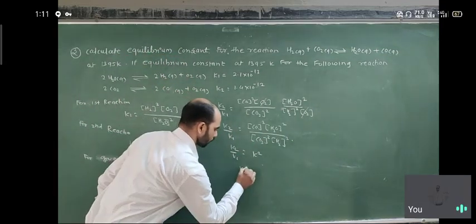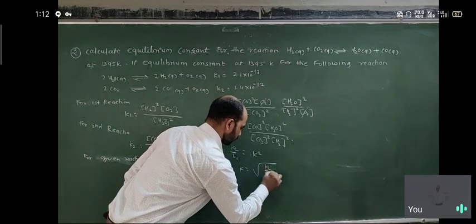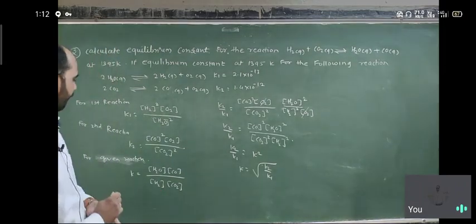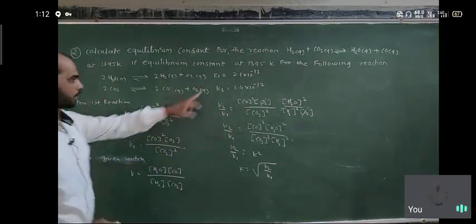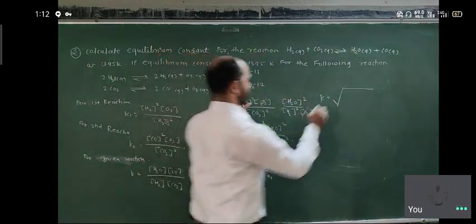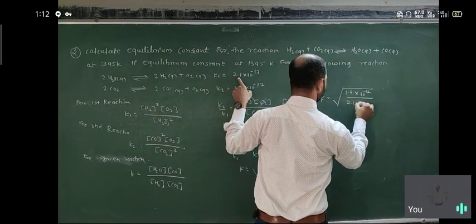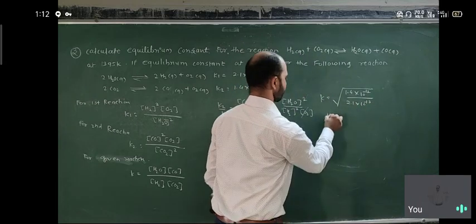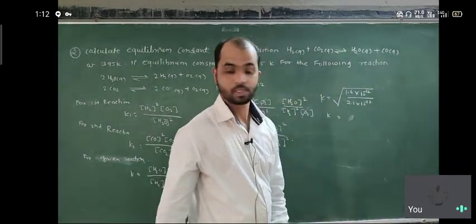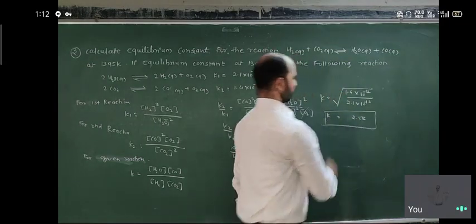So K equals the square root of K2 upon K1. Substituting the values: K equals the square root of 1.4 times 10 to the minus 12 upon 2.1 times 10 to the minus 13. The answer is K equals 2.58.